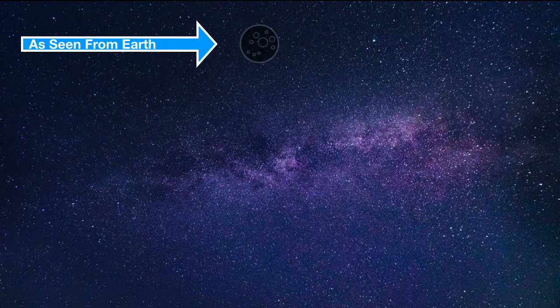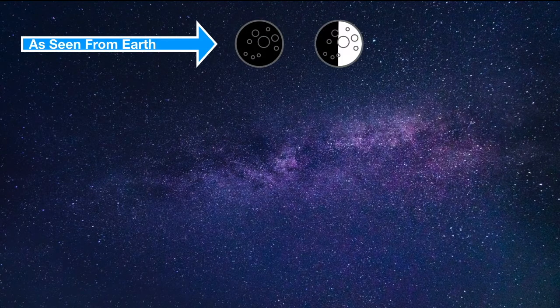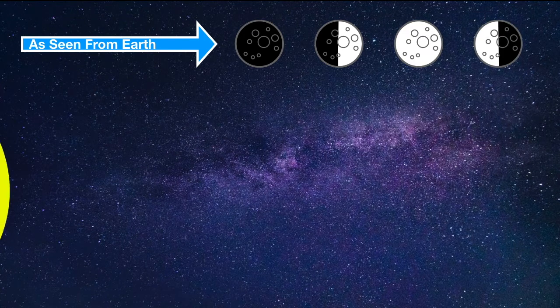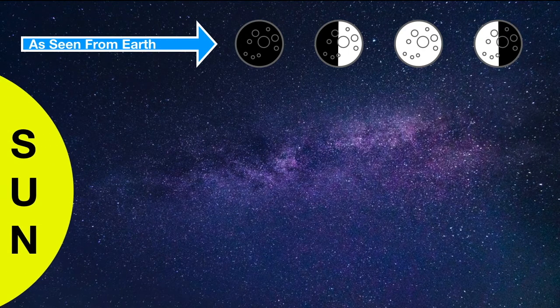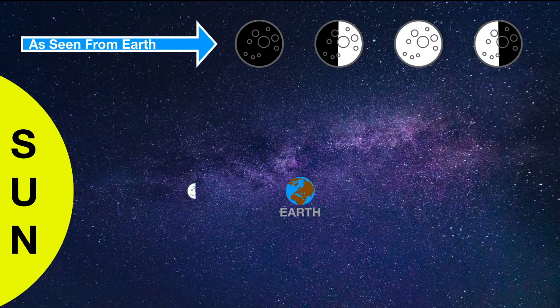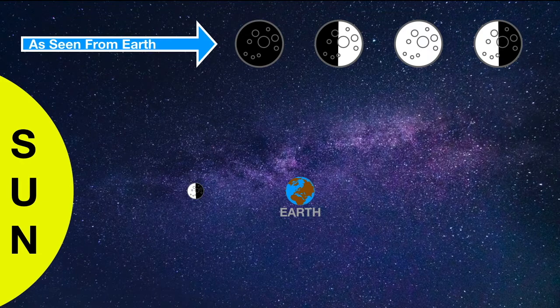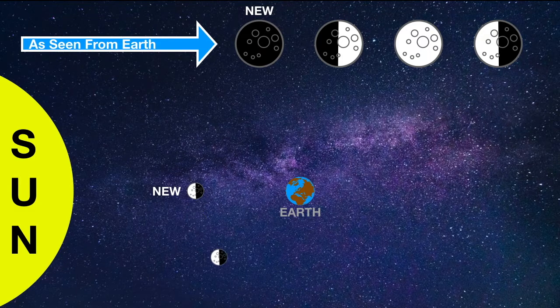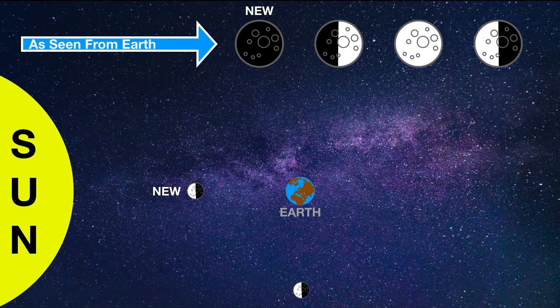The appearance of the moon from Earth changes throughout the month as it orbits the Earth. A new moon occurs when the moon is on the same side of the Earth as the Sun. This means that the lit side of the moon that always faces the Sun is facing away from the Earth, and we see a very dark disk. The first quarter occurs when the Sun, Earth, and moon form a 90 degree angle, which